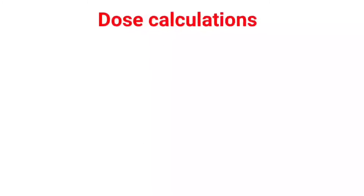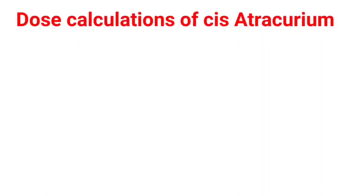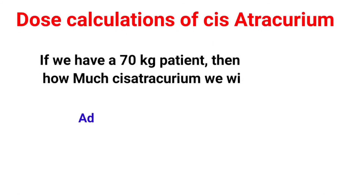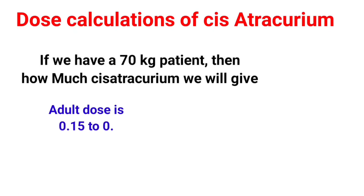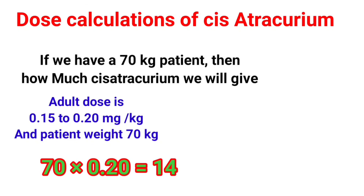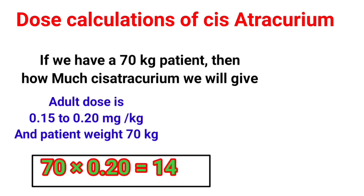Finally, the dose calculation of Cisatracurium: If we have a 70 kg patient, the adult dose is 0.15–0.20 mg per kg. Patient weight is 70 kg, so 70 × 0.20 = 14 mg. It means if we have a 70 kg patient, we will give 14 mg of Cisatracurium. That's all about Cisatracurium.